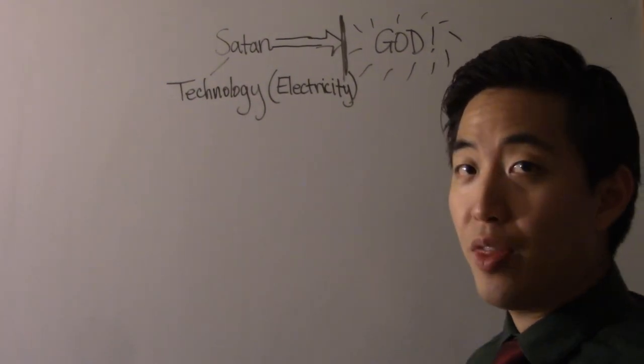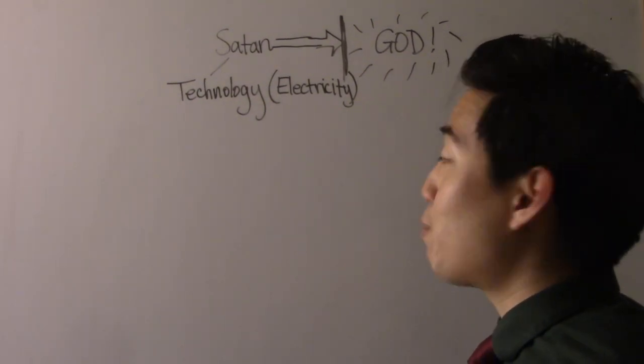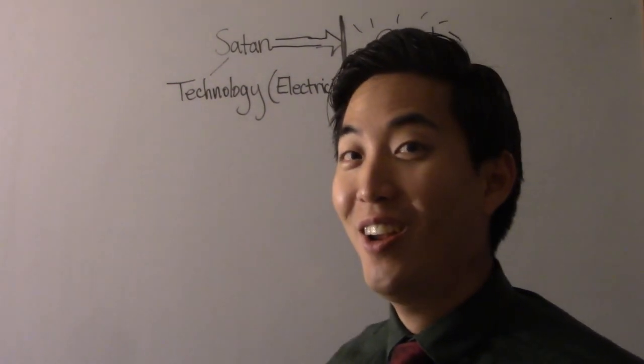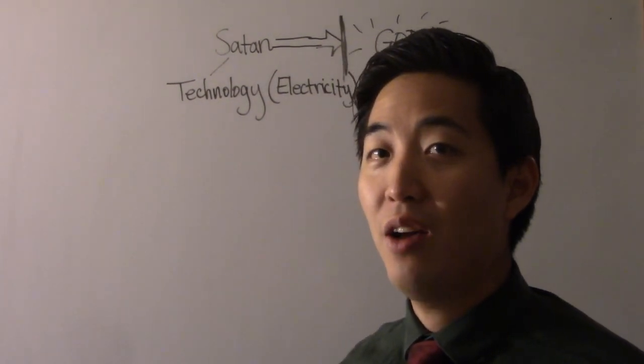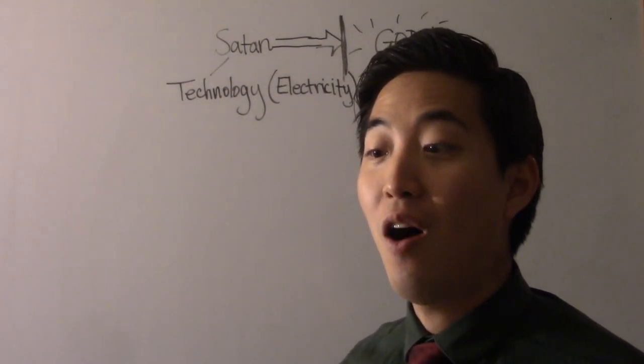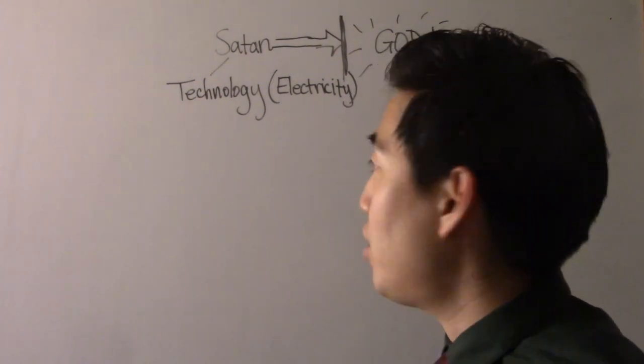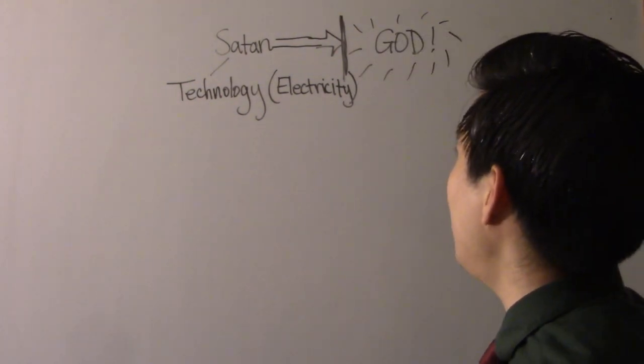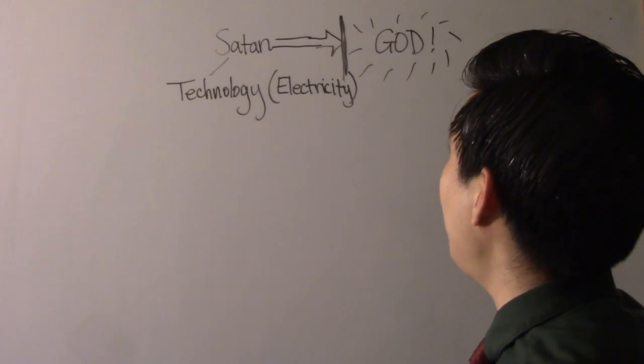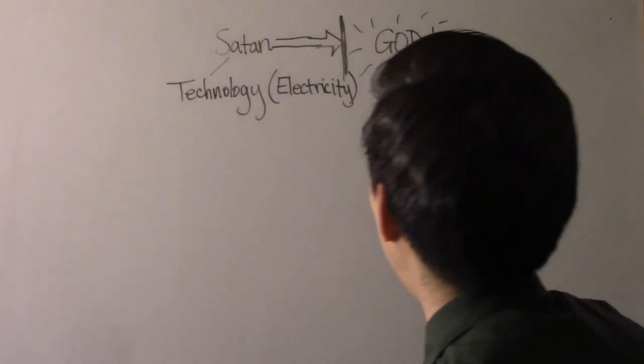And I showed you in other videos about that. He is known as the prince of the power of the air. He is also known as, I beheld Satan as lightning fallen from heaven. So there's no doubt, he's connected with electricity in a lot of things. But you'll find out, it is so interesting how it's so close.